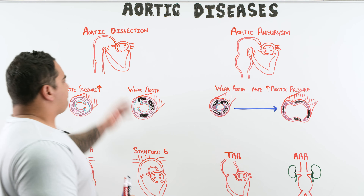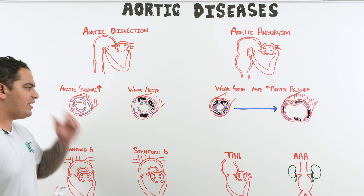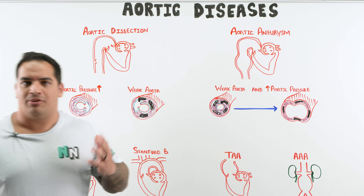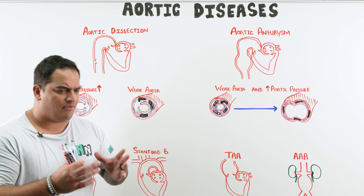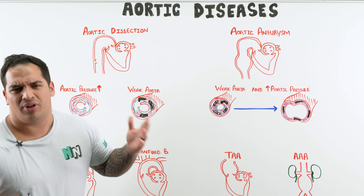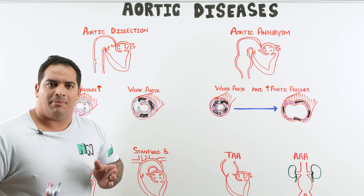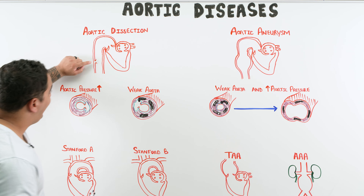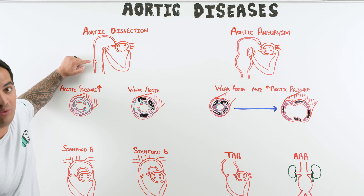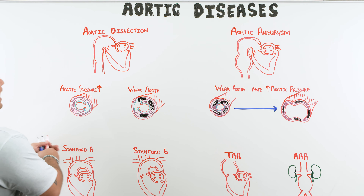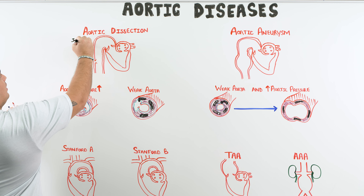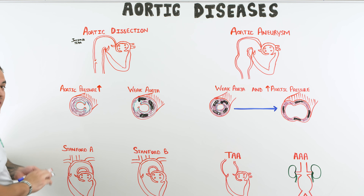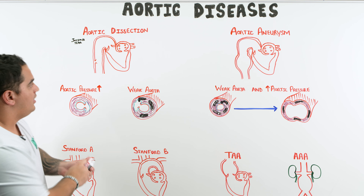First things first — aortic dissection. It's actually pretty straightforward. There is a tear within the intimal layer. Based on the anatomy of a blood vessel, you have the tunica intima, tunica media, and tunica externa. The tear occurs within that tunica intima.